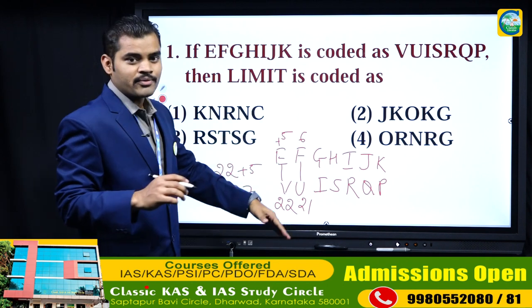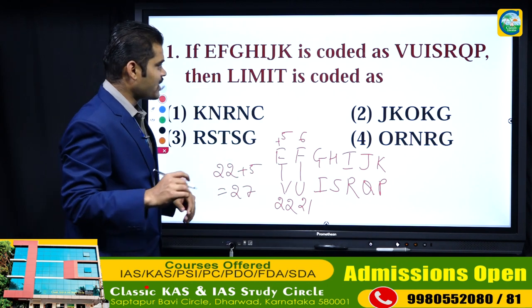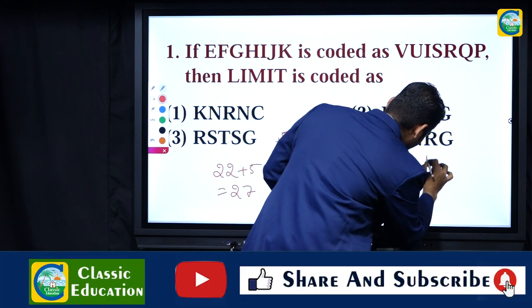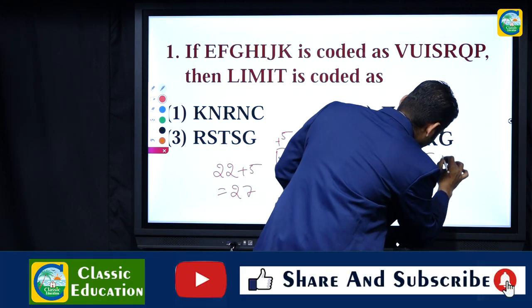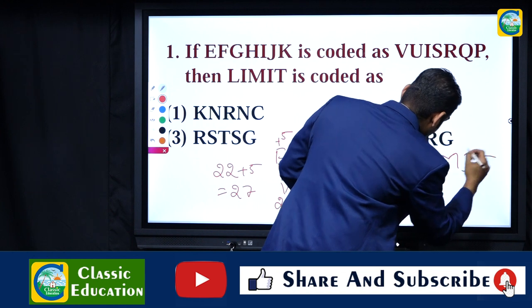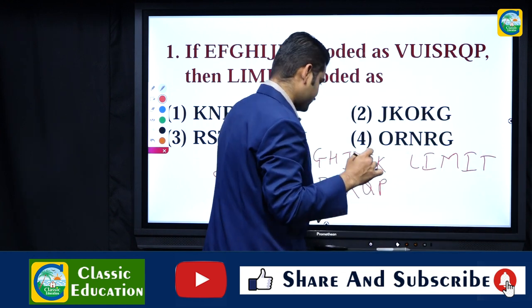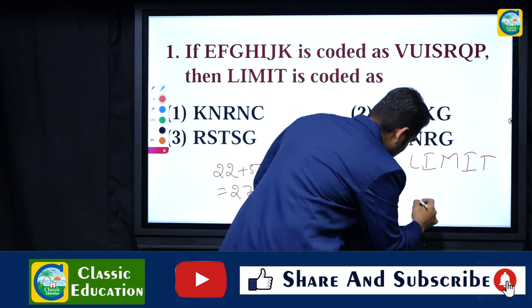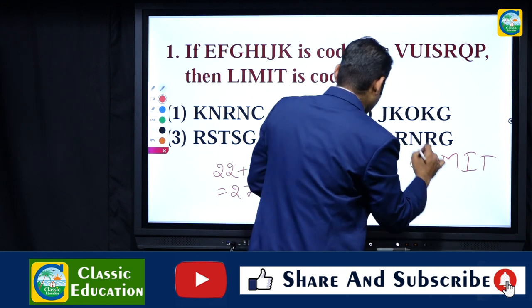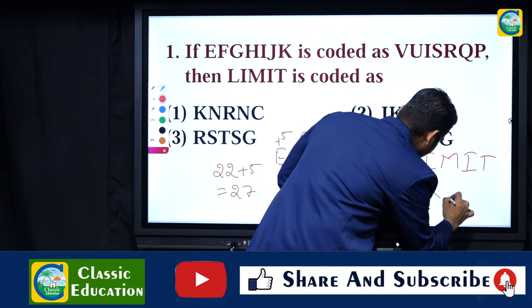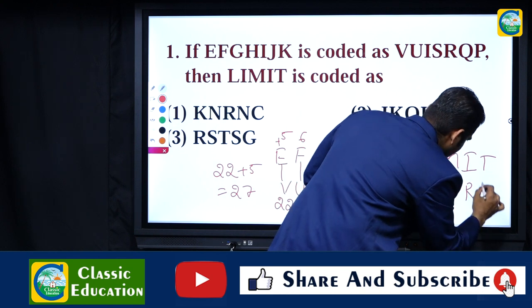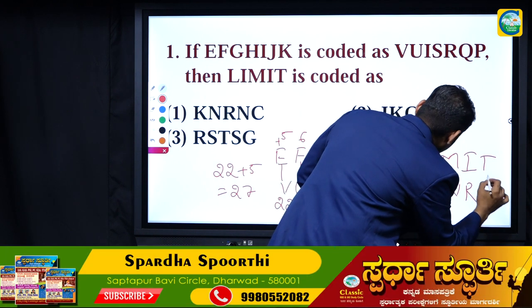Now for 'limit': L's opposite is O, I's opposite is R, M's opposite is N, I's opposite is R, T's opposite is G.